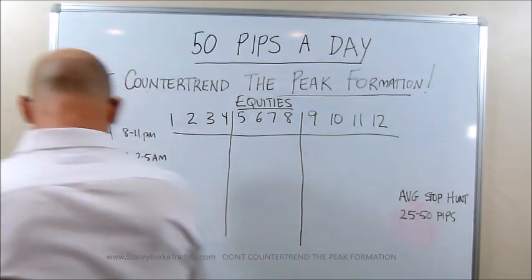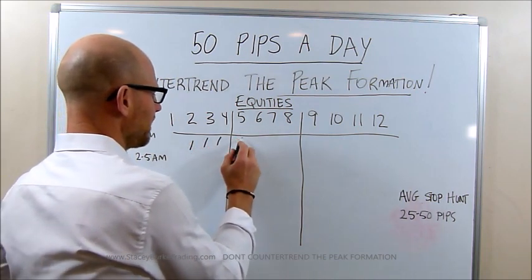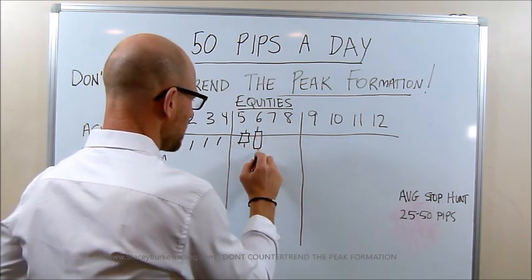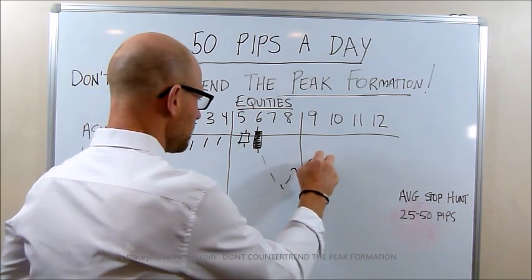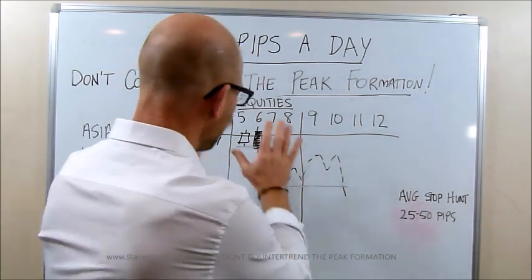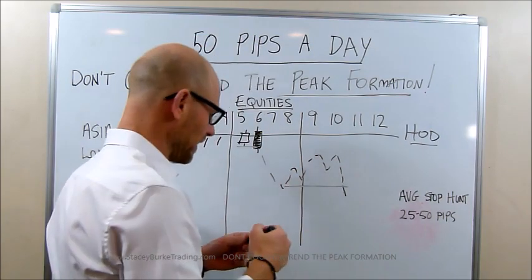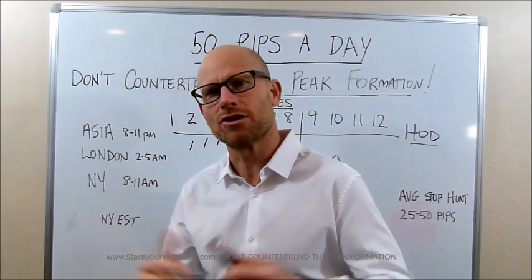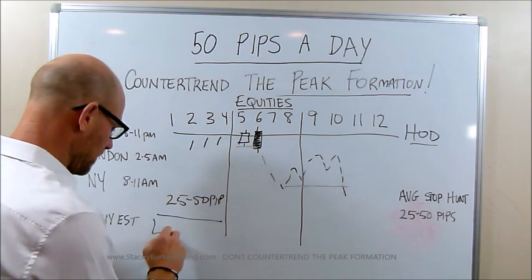So if Asia, for example, gives us in the first hour a 1-2-3 to the high, and then that second hour gives us a breakout pullback engulfment, and the market as we trade throughout the rest of the session puts a low in place but ends up taking out that low in that second to third hour window — that peak formation is really important because now we may know we have a high of the day in place, especially if the market has been making new lows. This was potentially a stop hunt back into the trend, maybe 25 to 50 pips from the previous low of the day.